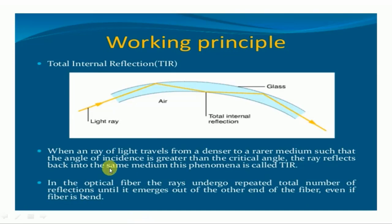When rays of light travel from a denser medium to a rarer medium such that the angle of incidence is greater than the critical angle, the ray reflects back into the same medium. This phenomenon is known as total internal reflection, and this is the basic principle used in optical fiber. In the optical fiber, rays undergo repeated total internal reflections until they emerge out of the other end, even if the fiber is bent.